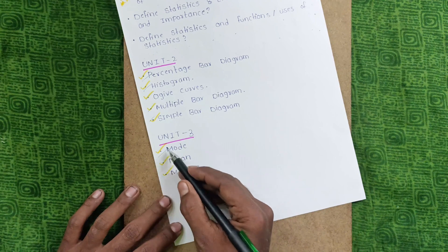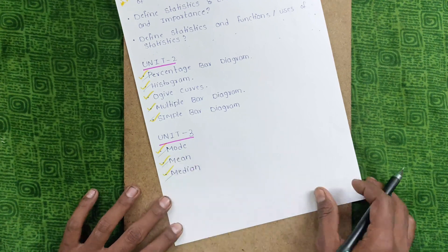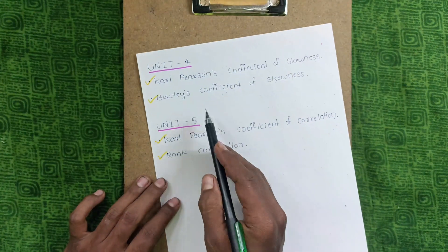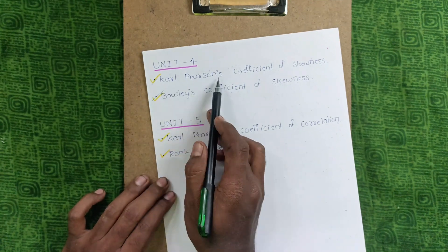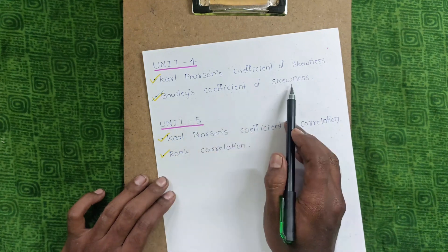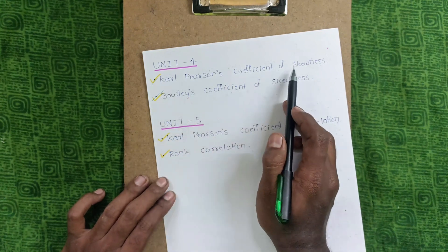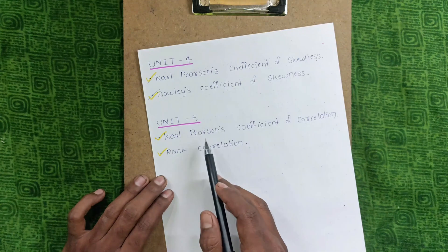types of problems: mode, mean, and median. In Unit 4, there will be problems like Carl Pearson coefficient of skewness and Bowley's coefficient of skewness, but Carl Pearson coefficient of skewness is the most important question. In Unit 5,